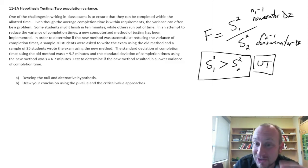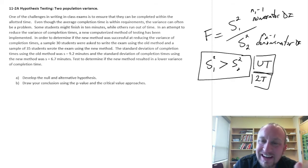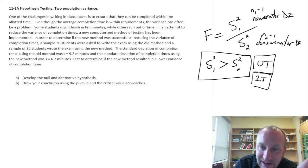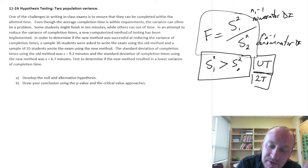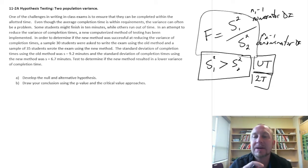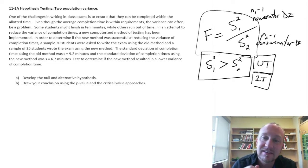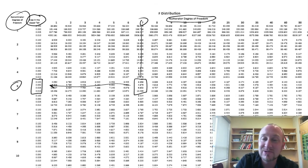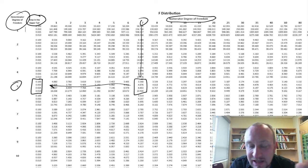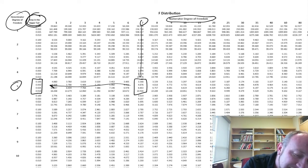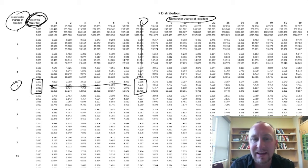This also applies to two-tail tests as well. All we're eliminating is the possibility of obtaining a test statistic that will fall in the lower tail of that distribution. We will always formulate our test statistic with the larger sample variance in the numerator. This ensures that we will always have a test statistic that lies in the upper half of our distribution, so that when we use these tables we will always find critical values that are helpful.